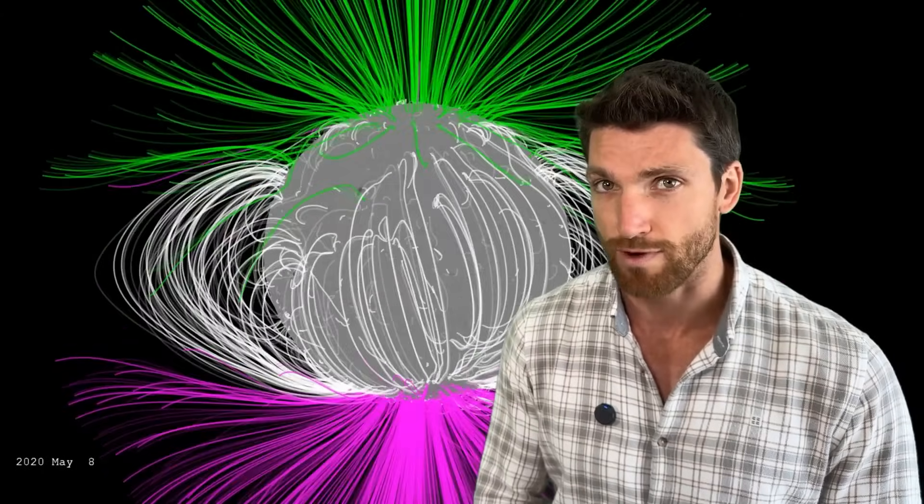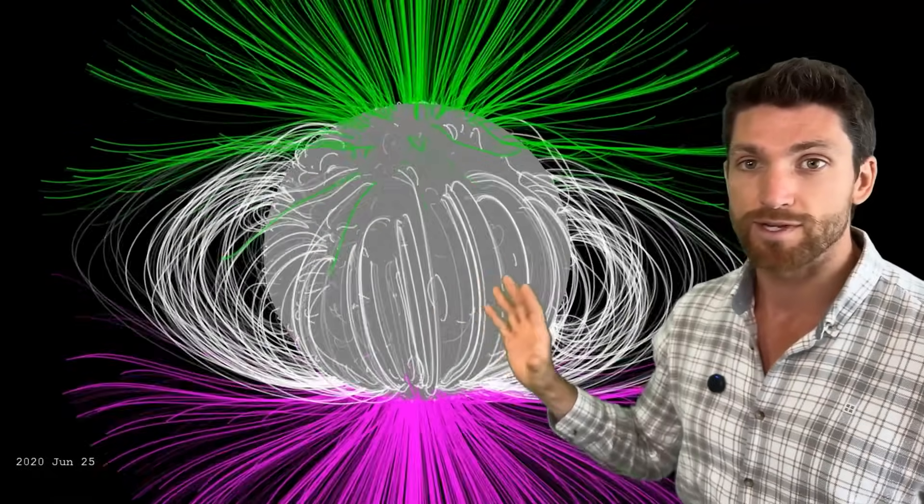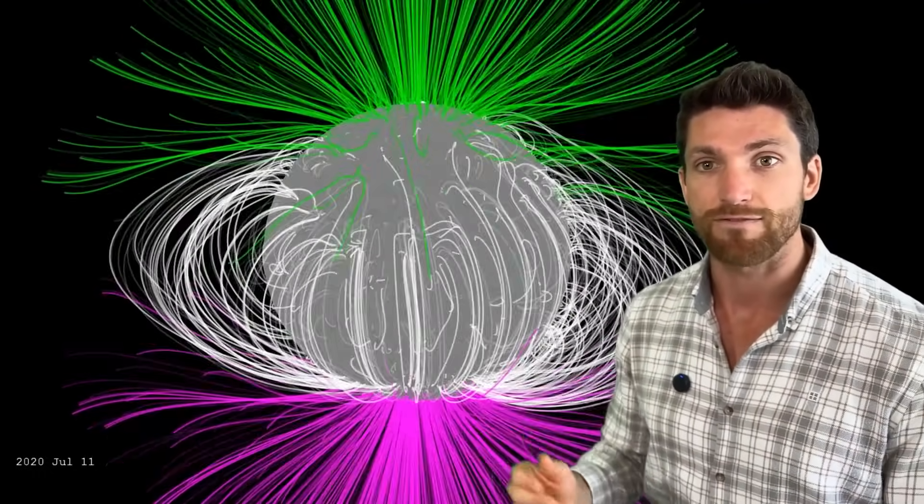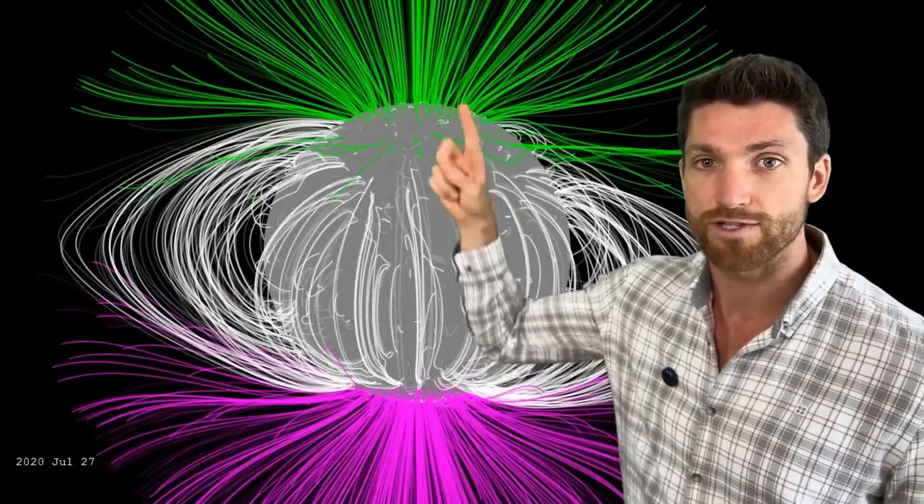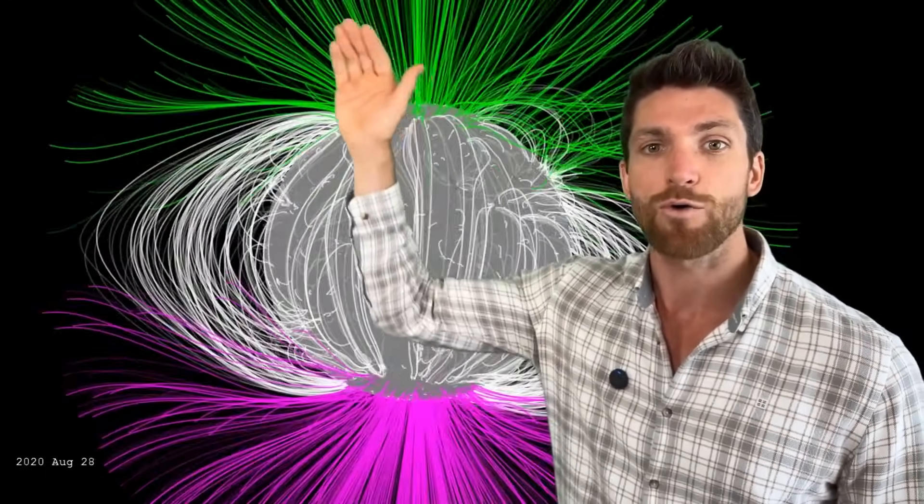Now some of you are astute students of the sun and you may be thinking, hey, actually the magnetic field is strengthening right now because we are moving away from solar maximum into the next solar minimum. And here we see during solar minimum the magnetic field polarity is quite strong. You have this clear dipole. Here we have an inward facing field, there we have an outward facing field.